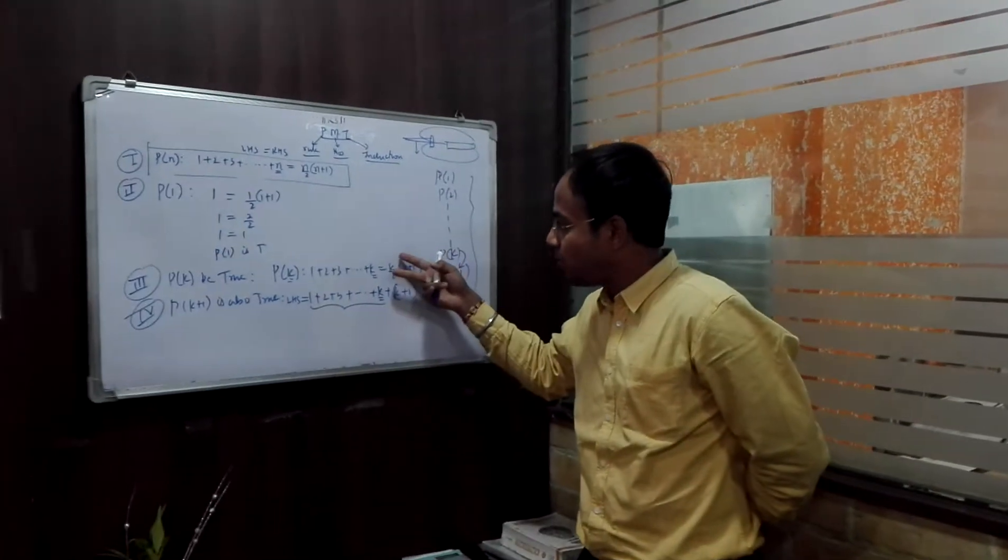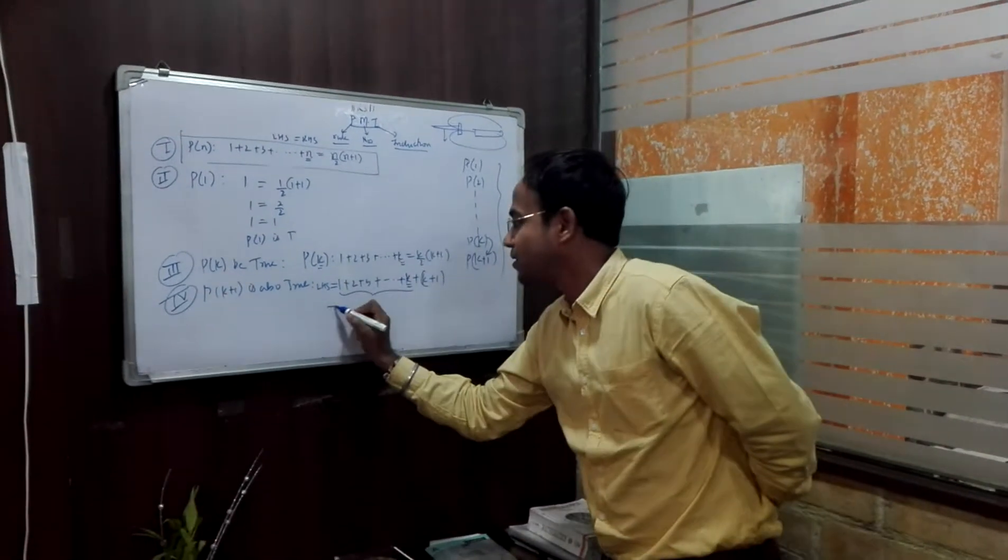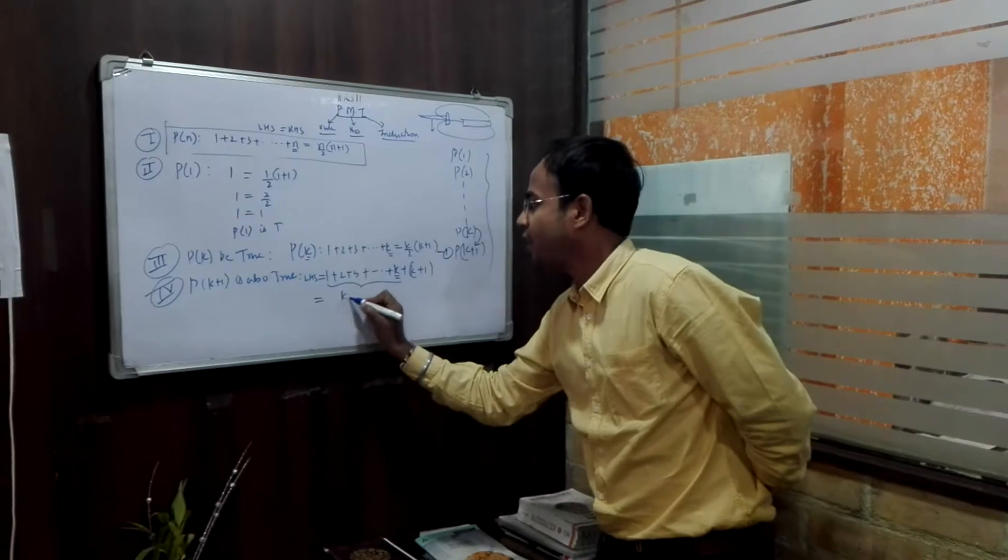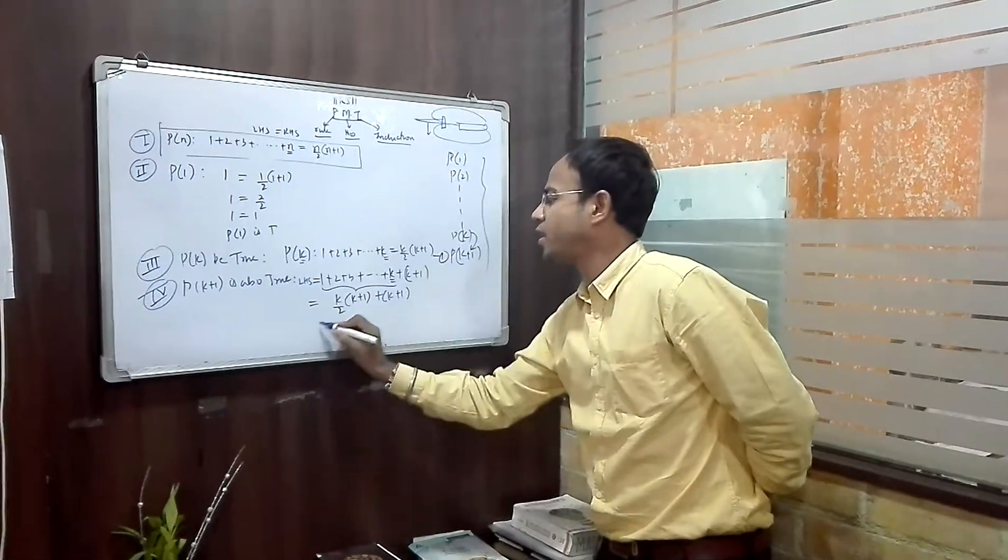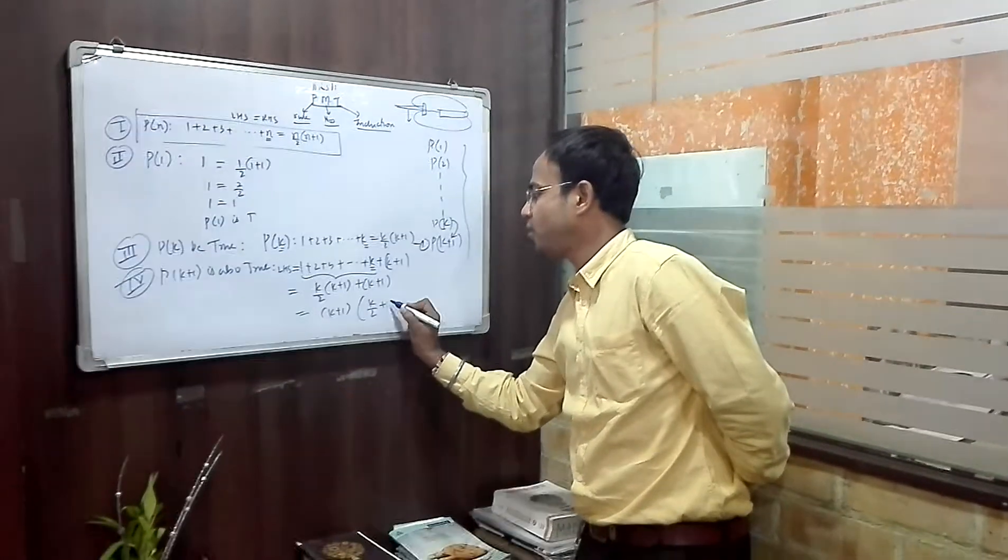This has to be utilized for this so that we can generalize. It will be induced. So this means what is the whole thing from equation number 1? K by 2 into K plus 1 plus K plus 1. What is common now, dear friends? K plus 1. K by 2 plus 1. And now what is inside the bracket? K by 2 plus 1.